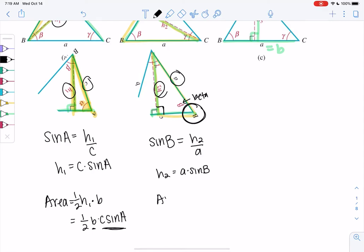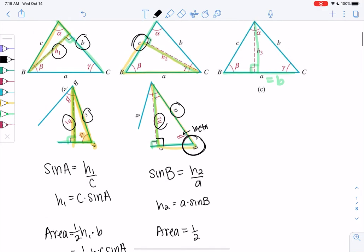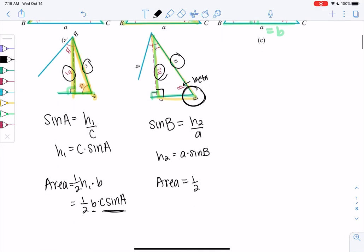And we'll do the same thing. Area is one half base. My base will be c in this triangle, times a sine B for height.